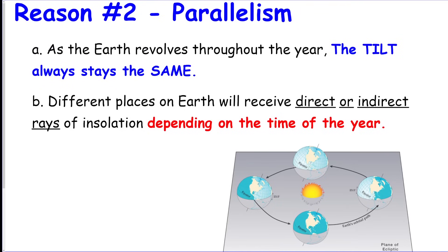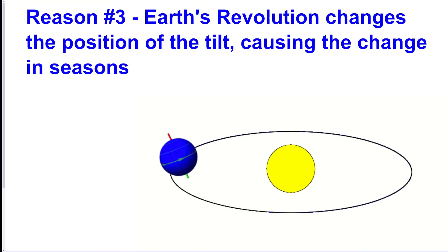Reason number two: parallelism. The tilt always stays in the same direction, so the Earth's not wobbling. And then reason number three: the Earth's revolution changes the position of the tilt like this. So tilt stays in the same direction, we revolve, and that gives you the seasons.